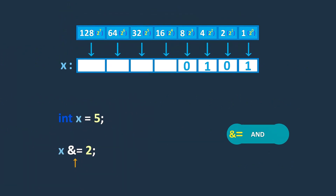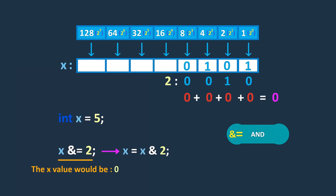The bitwise AND assignment operator performs a bitwise AND operation between the variable on the left-hand side and the value on the right-hand side and assigns the result to the variable. For example, x &= 2 is a shorthand notation of x = x & 2. In this example, the value of x would be 0.